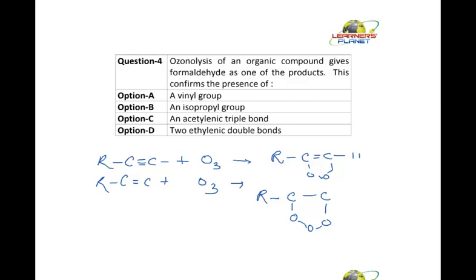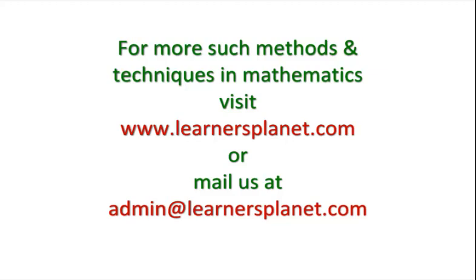It is definitely not a triple bond. This will undergo a cleavage and will form HCHO and RCHO. So what type of group should be present there? There should be a vinyl group present. What is your right option? A. It should not be isopropyl, not acetylene triple bond, or two ethylene double bonds. There has to be a vinyl group present there. Then only it will form one molecule of formaldehyde. This is the answer to this question. Let's move on.